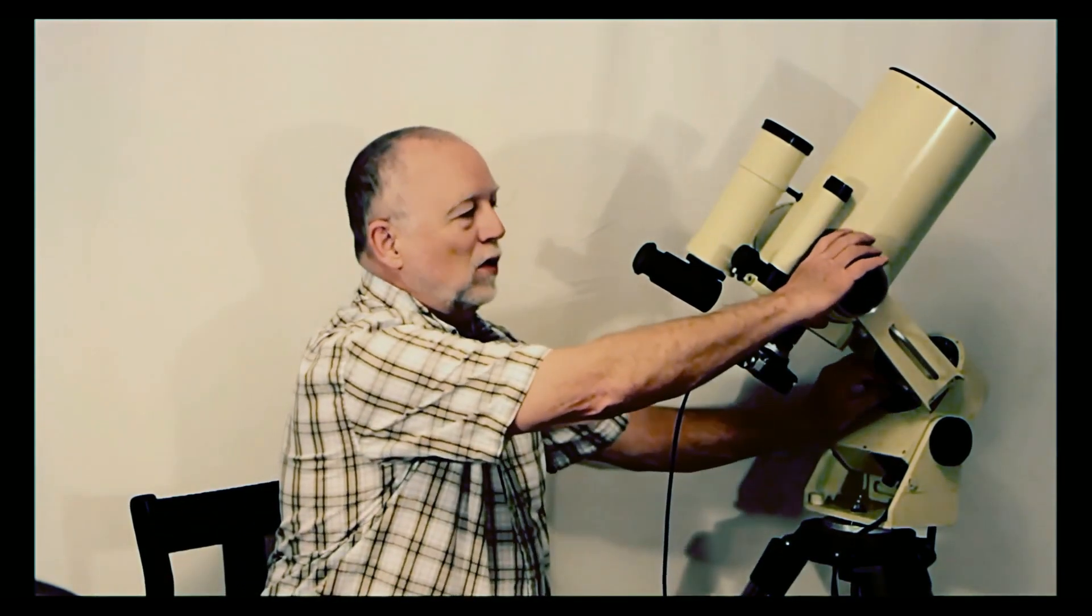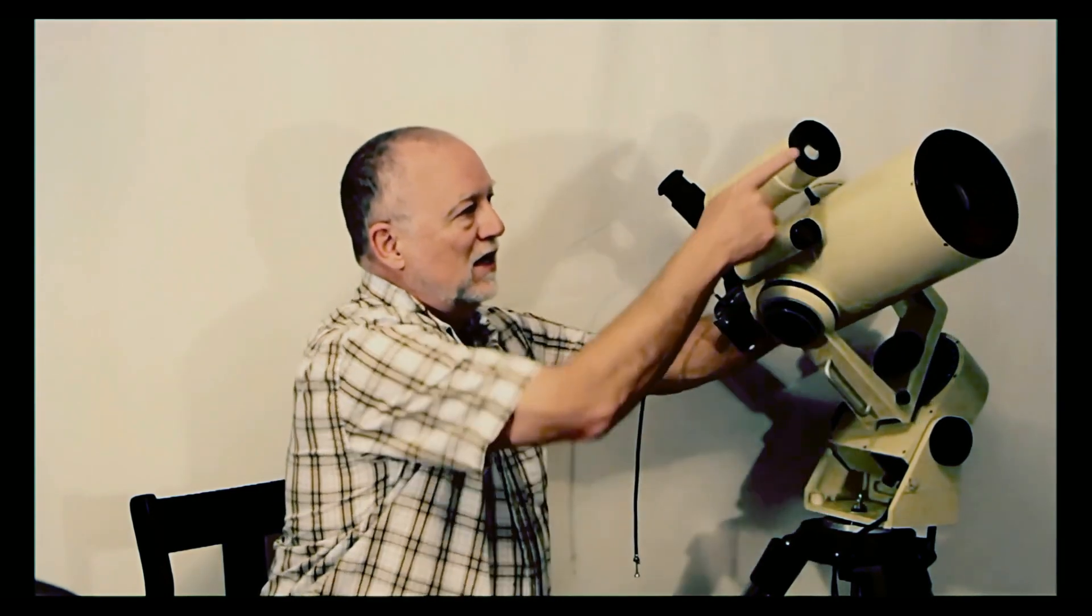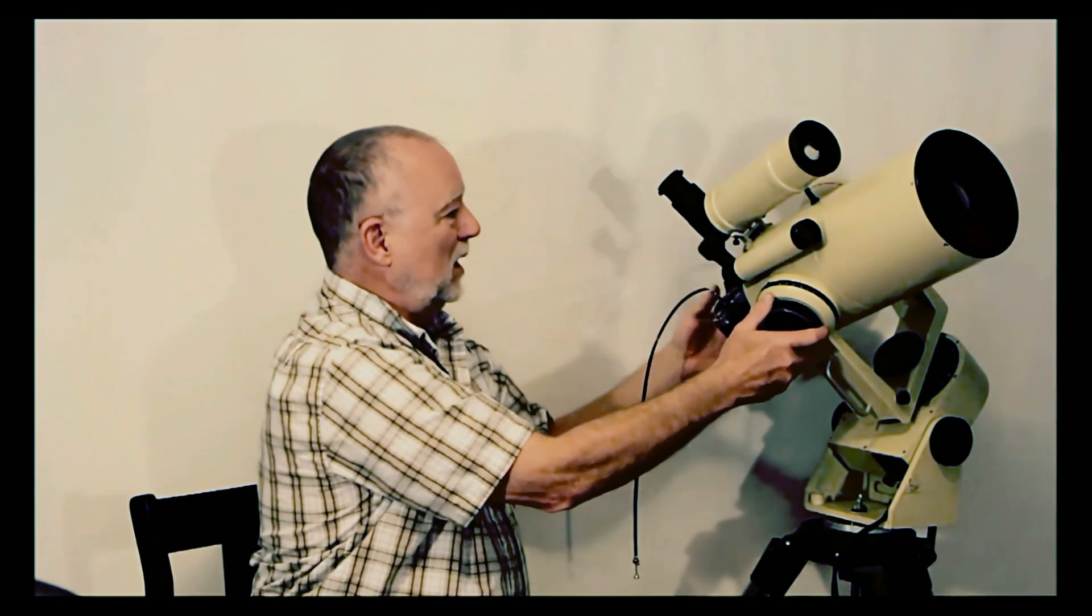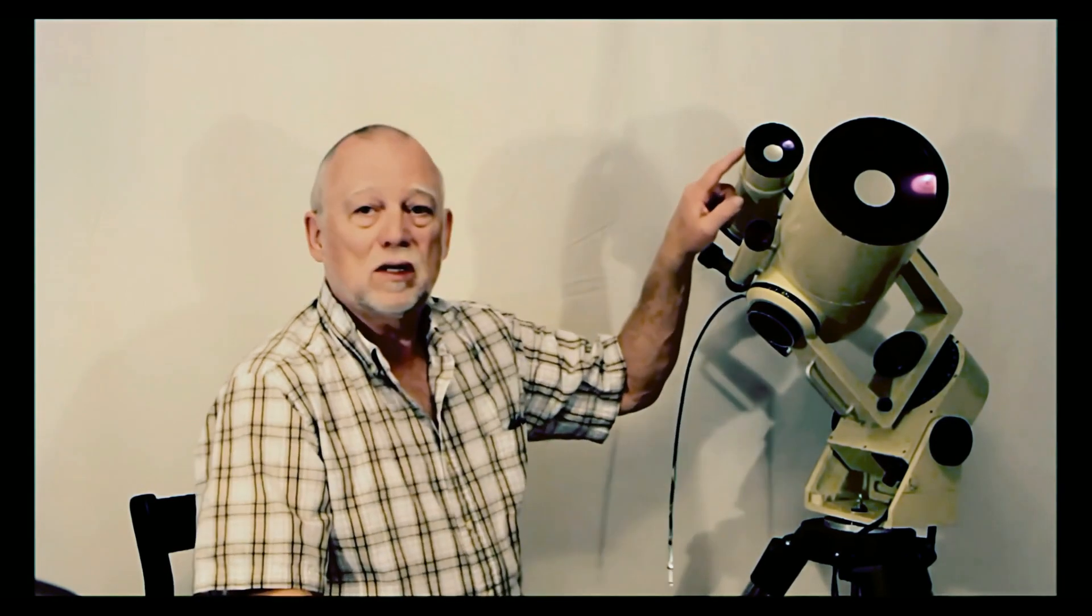For example, this is a six inch F10 Maksutov. This telescope was purported to be for astrophotography. It has a guide scope, and I find this guide scope to be fascinating, absolutely fascinating. This is a 60 millimeter f about 14, 1,500 millimeters of focal length. So that's a very long focal length.